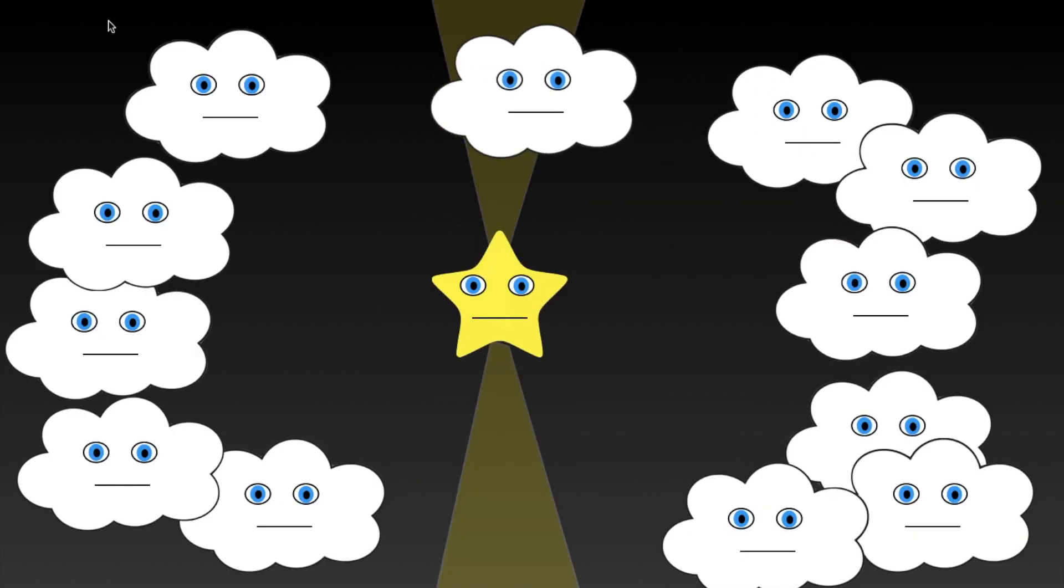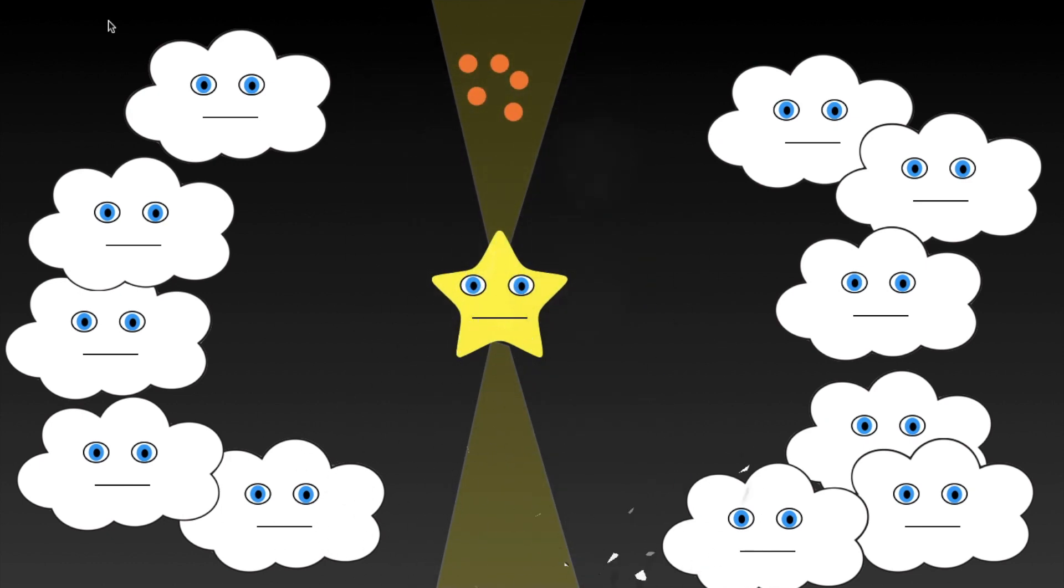When these jets come in contact with the surrounding gas, Herbig-Haro objects form at the collisions.